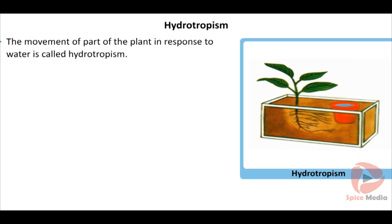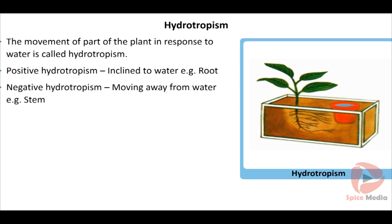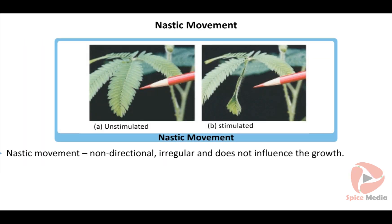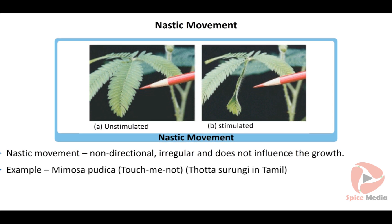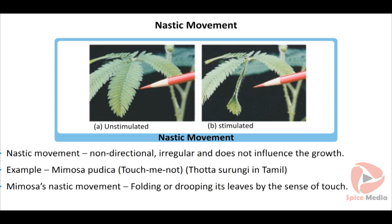The movement of a plant part in response to water is called hydrotropism. When a part moves towards water, it is positively hydrotropic — example: root. When it moves away from water, it is negatively hydrotropic — example: stem. The non-directional and irregular movement of plant parts is called nastic movement, which does not influence growth. A good example is the touch-me-not plant, Mimosa pudica, which responds to touch by folding up and drooping its leaves.